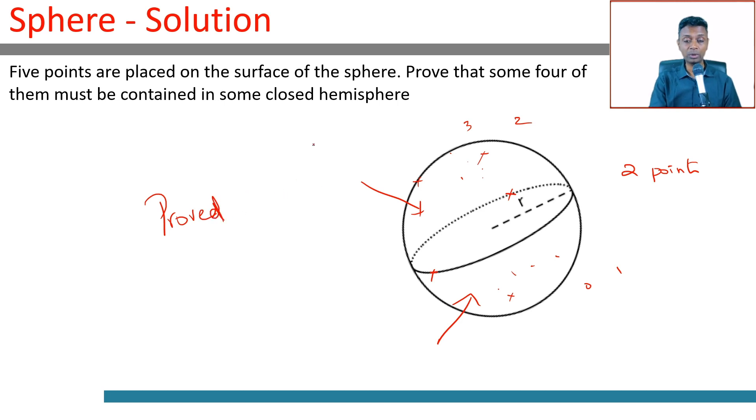Where is the pigeonhole principle angle to it? We have three points to be put into two hemispheres. There will be at least one hemisphere that has at least two points. You put one here, you put one here, the third one has to go in one of these two. That's the pigeonhole principle angle to this.